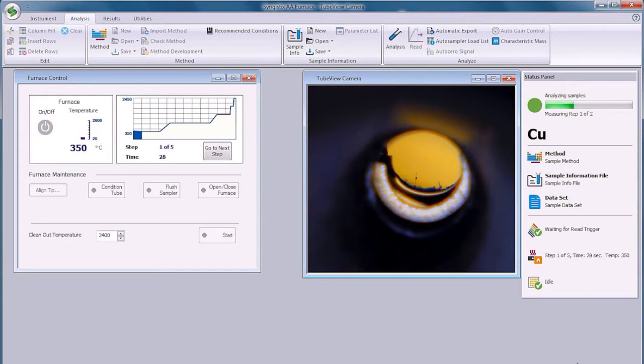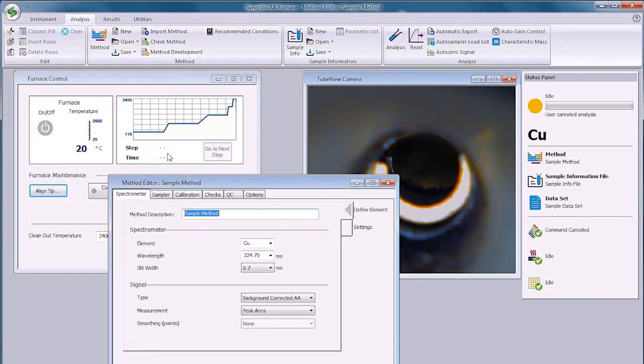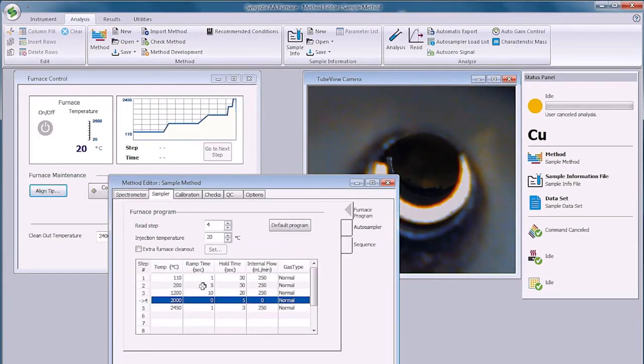Carefully monitor the sample in the drying phase using the furnace viewing camera or the dental mirror. If you see the sample boiling vigorously, change the furnace method, increase the ramp time or the drying steps, or reduce the programmed temperatures.